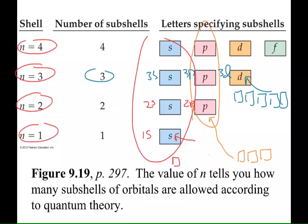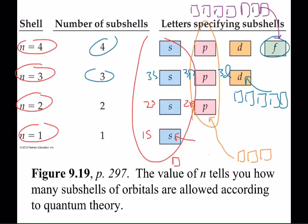Very good. When n equals 4, we pick up our first f-type subshell. How many orbitals in an f-type subshell? Seven. Very good: four, five, six, seven.